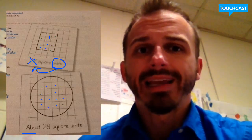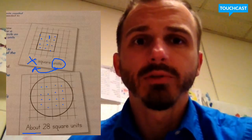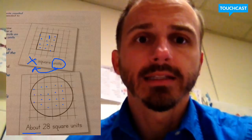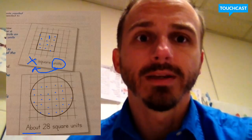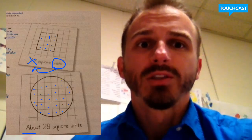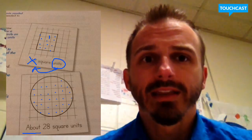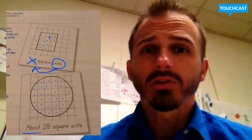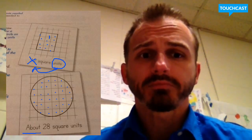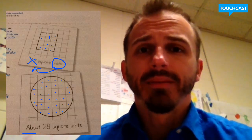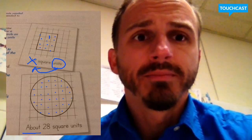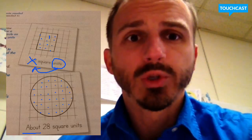Now I can count the ones around it that are inside: 17, 18, 19, 20, 21, 22, 23, 24, 25, 26, 27, 28, 29, 30, 31, 32. There are 32 squares inside there, but it's not really 32 because they're not completely covered — there are only about 16 of them that are partial squares.